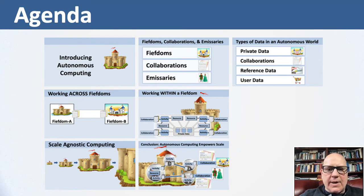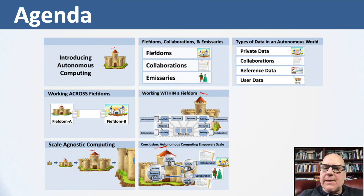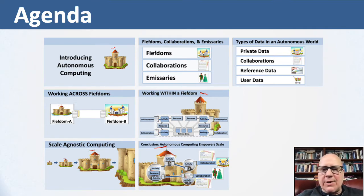Let's look at the agenda for today. First, we're going to introduce the idea of autonomy and what is autonomous computing. Then we're going to talk about three big pieces in the pattern. Fiefdoms, which are an autonomous boundary where computing happens only by messaging coming in and out because it's independent or autonomous. Collaborations, which are sets of related messages to do long-running work.